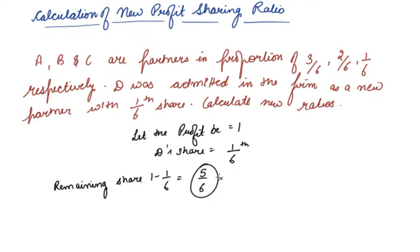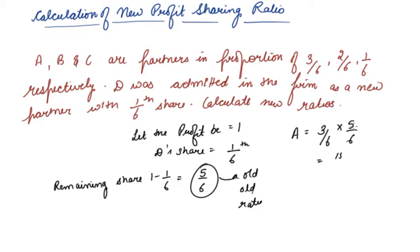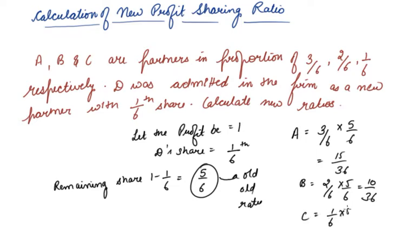This 5/6 will be divided among the old partners in their old ratio. A's share: 3/6 of 5/6 = 15/36. B's share: 2/6 of 5/6 = 10/36. C's share: 1/6 of 5/6 = 5/36.